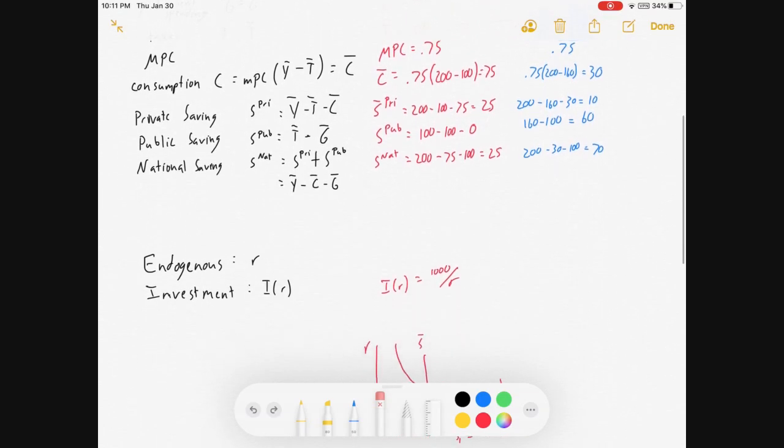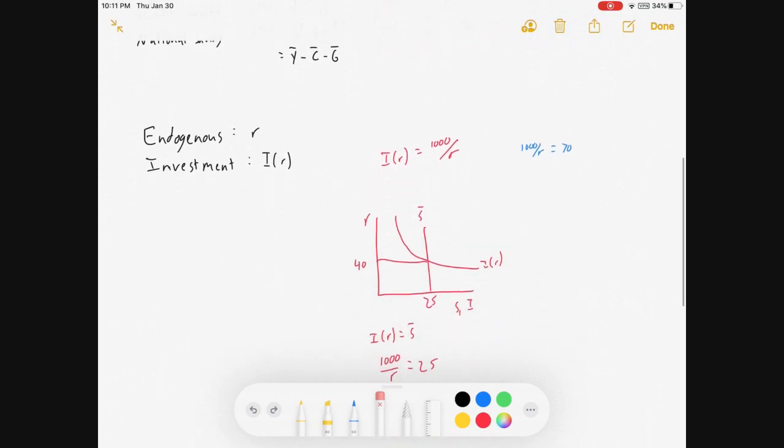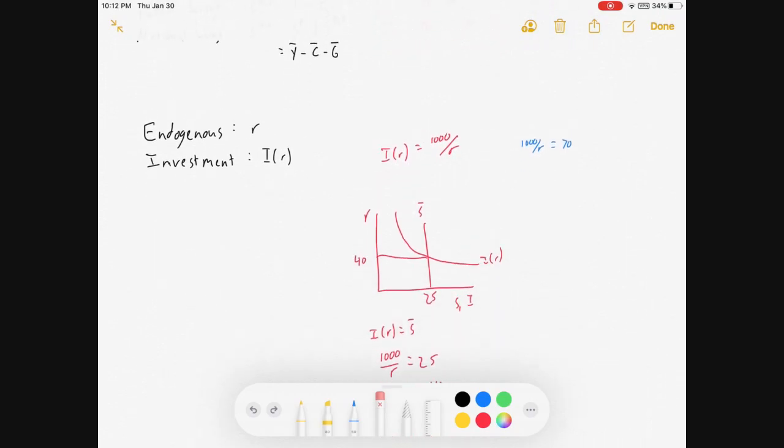Okay. We can go along down here. If I wanted to solve for the interest rate, 1,000 over R equals 70, solve for R, you'll get R is about 14.286. So here, if we get higher savings on our graph, it will lead to lower interest rates.